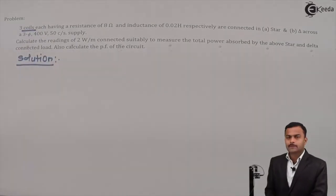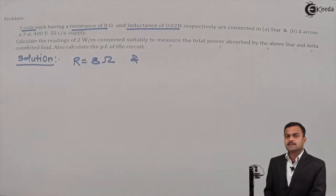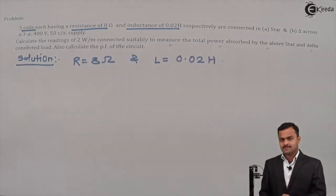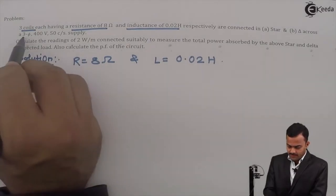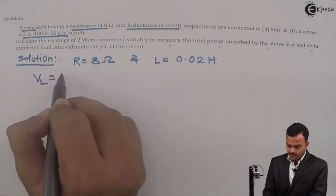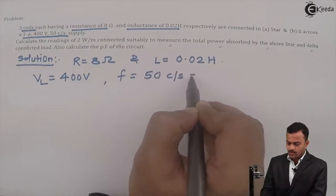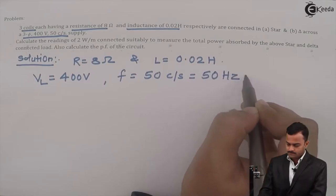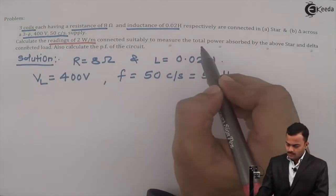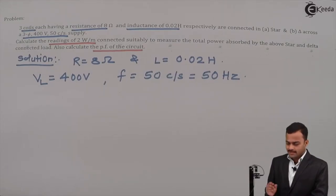Also calculate the power factor of the circuit. So let's solve. They are given three coils - that means it's an inductive circuit with resistance of 8 ohms and inductance of 0.02 henry, connected first in star and then in delta. Line voltage is 400 volts and frequency is 50 hertz. What we need to obtain is readings of two wattmeters and power factor of the circuit.